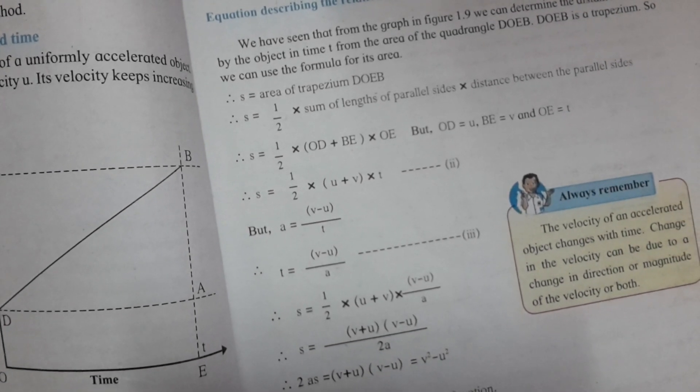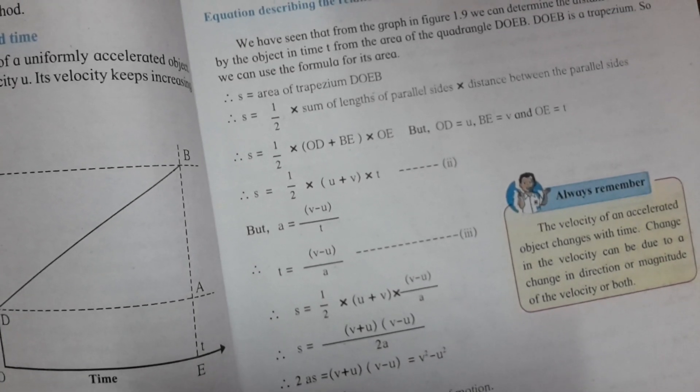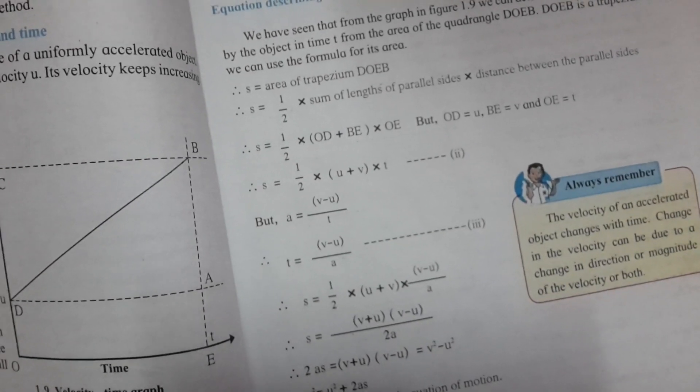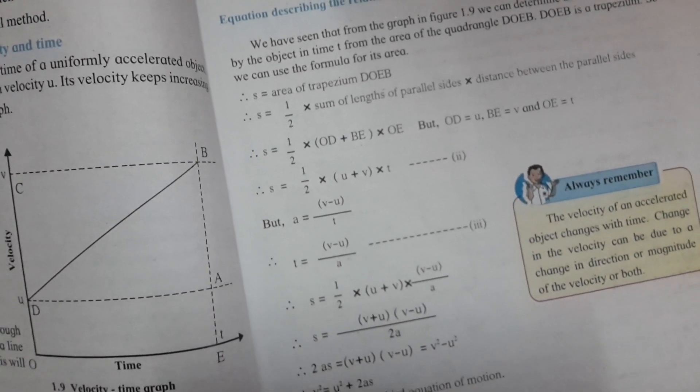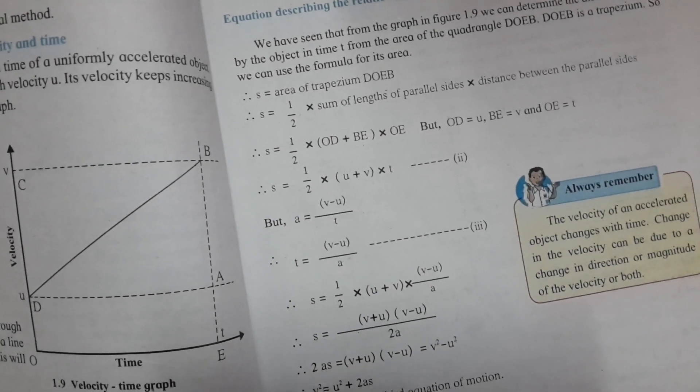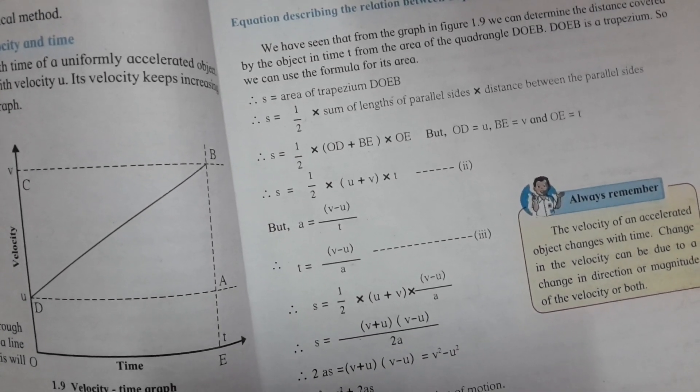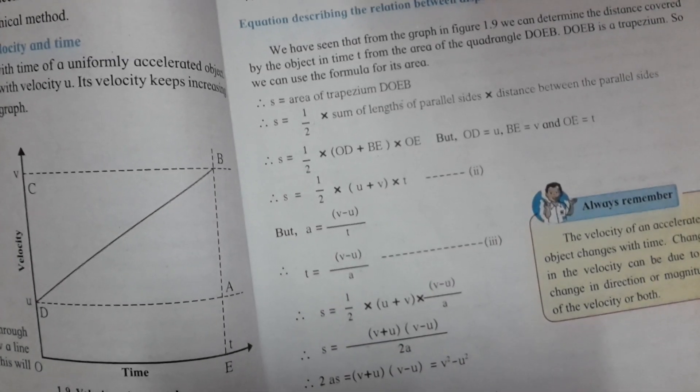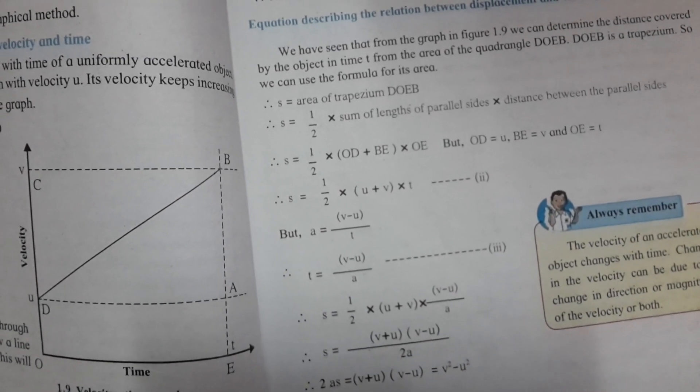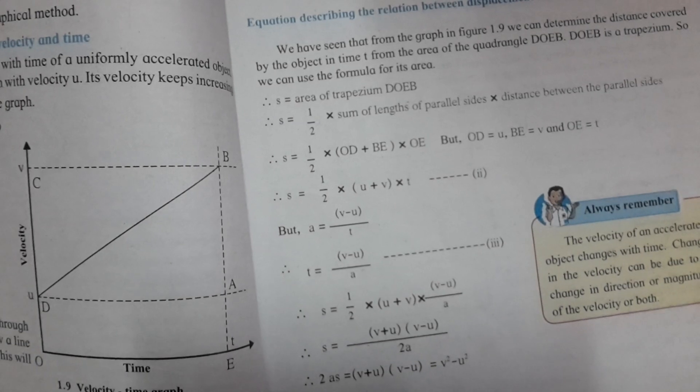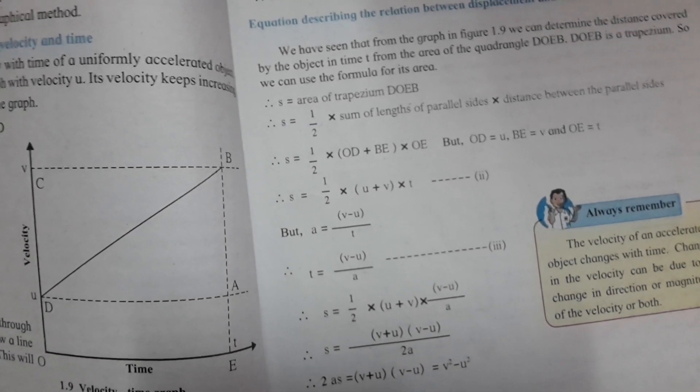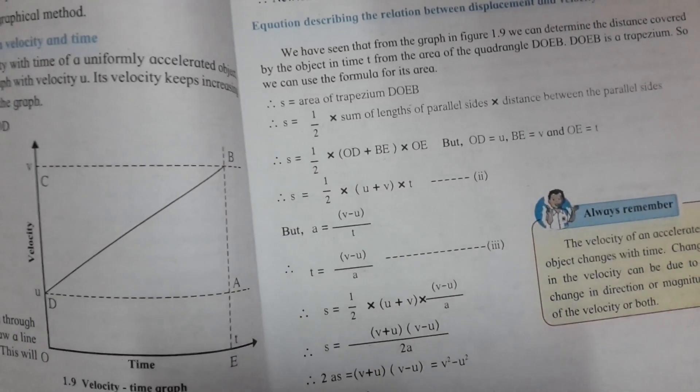We can determine the distance covered by the object in time T from the area of quadrangle DOEB. DOEB is a trapezium, so we can use the formula for its area.